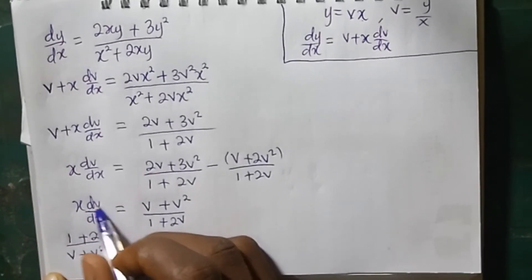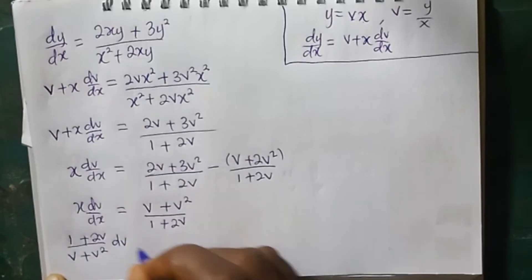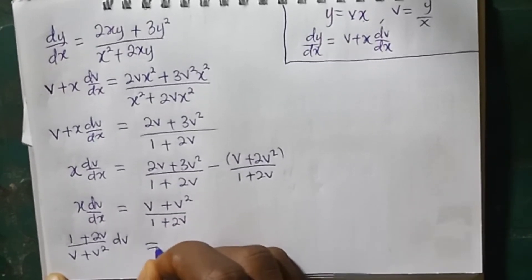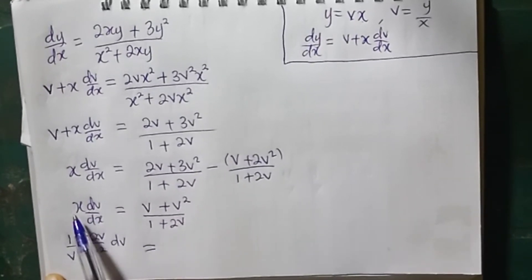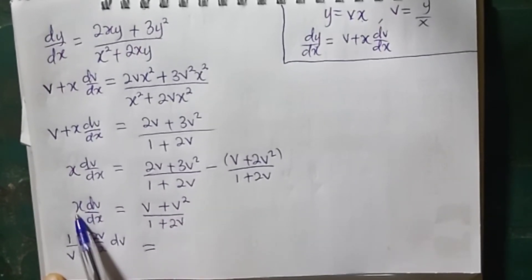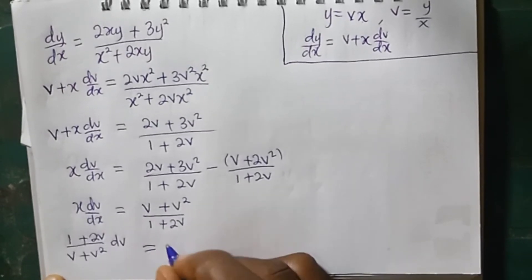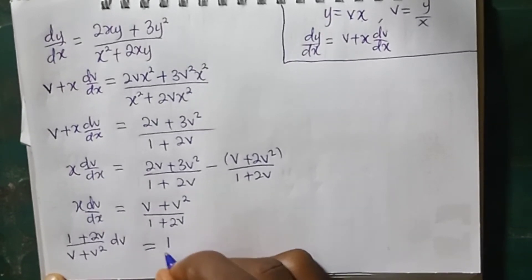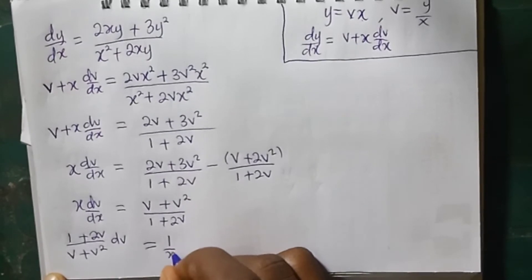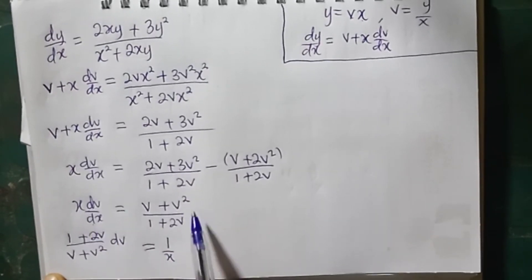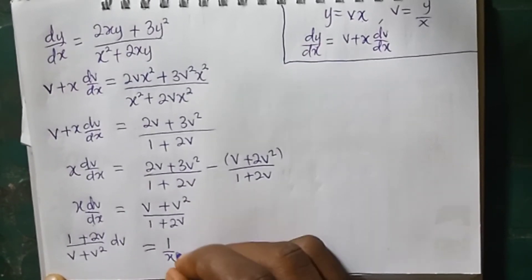We already have dv there. And on the right-hand side, we are going to take x and dx to the right-hand side. Since x is multiplying on the left, it will divide on the right. And since dx is dividing on the left, it will multiply on the right, giving dx over x.